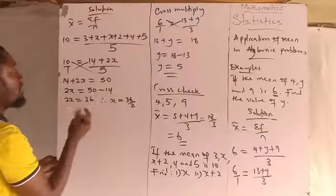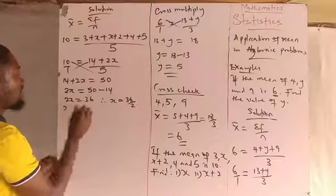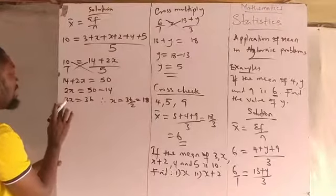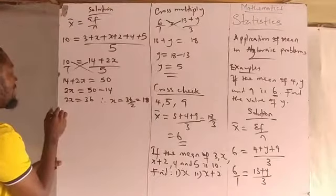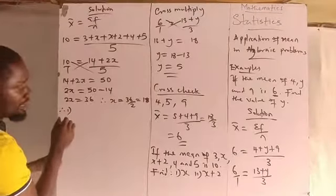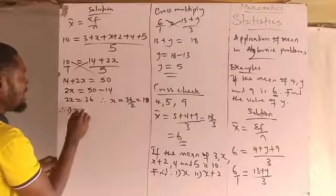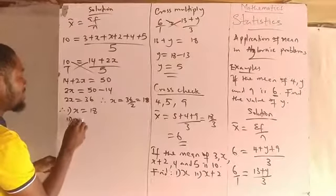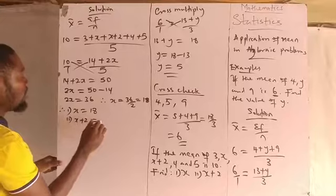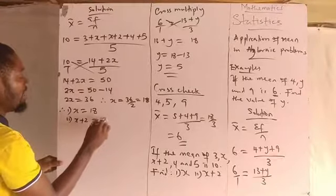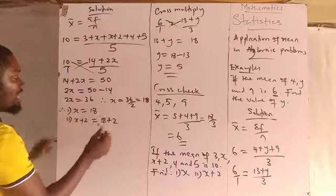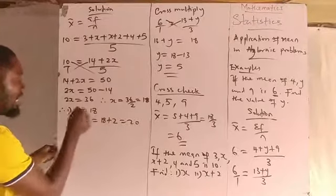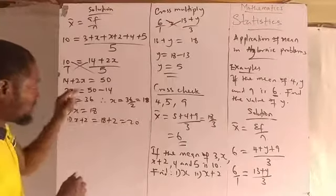Dividing gives us x equals 18. So: number one — x is 18. Number two — x plus 2 equals 18 plus 2, which gives us 20. Therefore x is 18 and x plus 2 is 20.